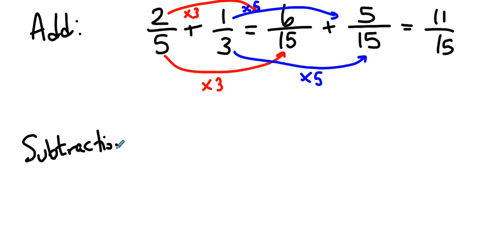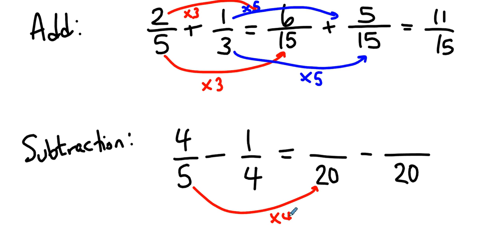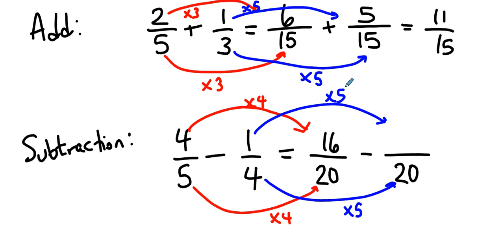Subtraction is no different. If we're going to do four-fifths minus one-fourth, we decide that we're going to split the fifths and the fourths into a smaller piece. What would that smaller piece be? It would be twenty. The fifths each get divided into four smaller pieces, so the ones we want also get divided into four smaller pieces. The fourths each get divided into five smaller pieces, so the one we want is also divided into five smaller pieces. So if we have 16 twentieths and subtract 5 twentieths, that is 11 over 20.